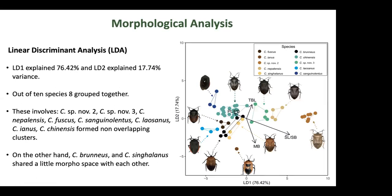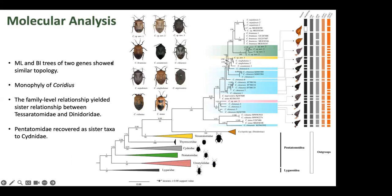Coming to the results, we first performed morphological analysis using linear discriminant analysis. The graph shows results where the x-axis explains 76% and the y-axis explains 17% of total variance. Based on prior knowledge, we assigned 10 groups of species. Eight species formed non-overlapping clusters: Coridius species nova 2, species nova 3, nepalensis, fuscus, sanguinolentus, laosanus, eanus, and chinensis. On the other hand, Coridius bruneus and singalanus shared a little morphospace with each other.